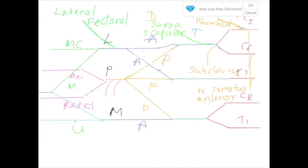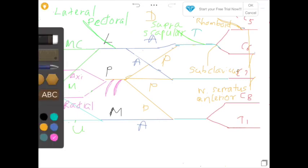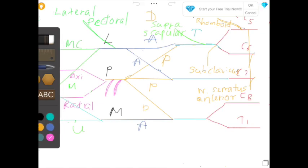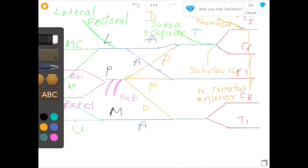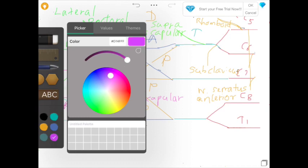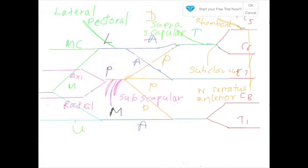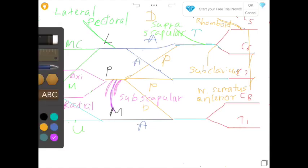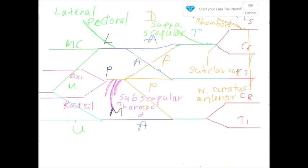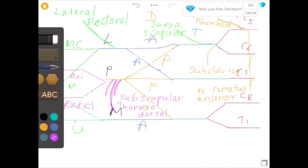From the posterior cord of the brachial plexus there are three branches: the upper and lower subscapular nerves and the thoracodorsal nerve. The upper and lower subscapular nerves are present, and in between these two nerves the thoracodorsal nerve arises, which supplies the latissimus dorsi muscle. The axillary nerve and radial nerve are the terminal branches arising from the posterior cord of the brachial plexus.